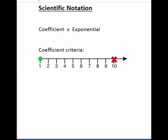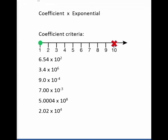Here are some examples. I also included two examples that are not considered scientific notation. They are legitimate numbers, but they don't meet the scientific notation format because the coefficient is greater than 10 in one case, and in the other the coefficient is less than 1.